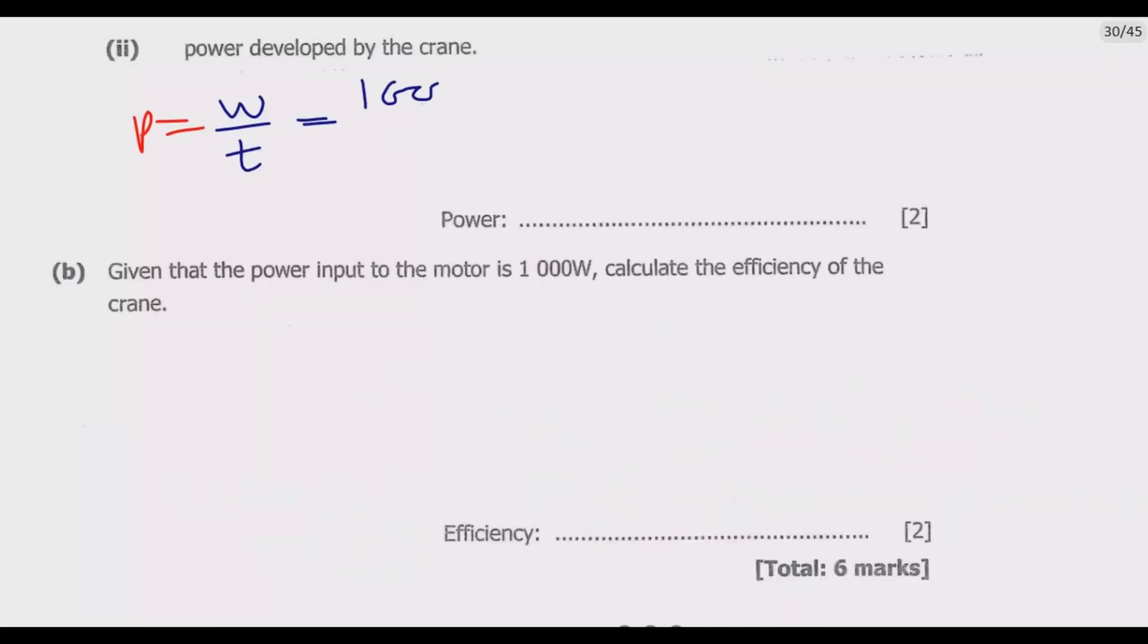So it will be 16,000 divided by 20, which gives us 800 watts. You need to ensure that units are correct - if units are incorrect, then you lose some marks. Once you do that, you get these two marks.